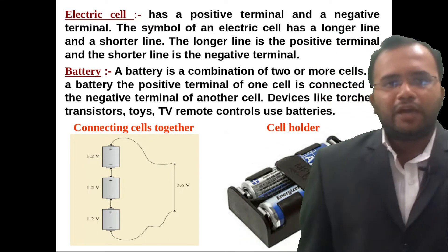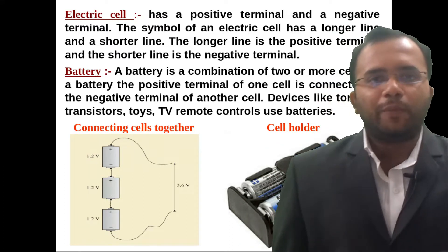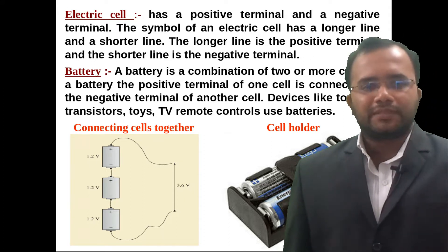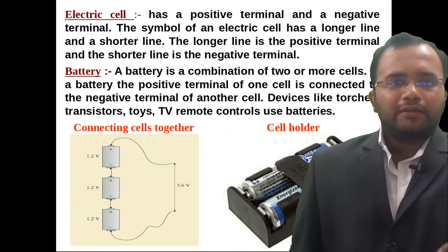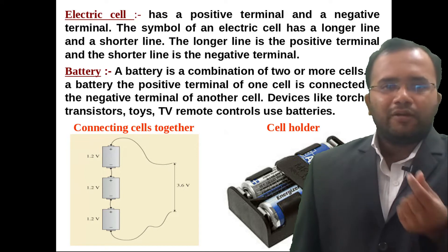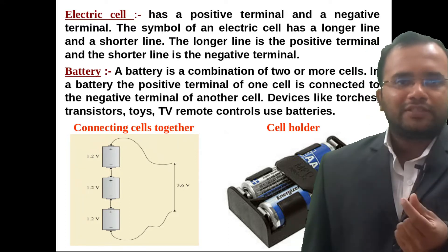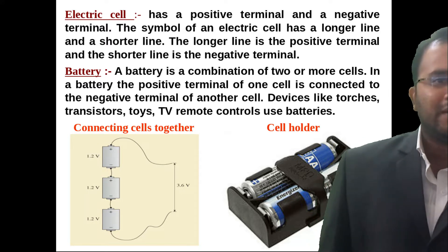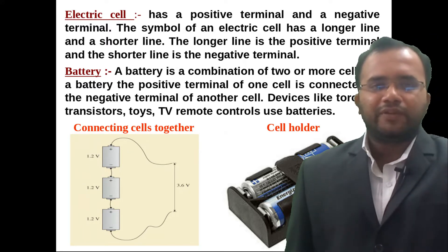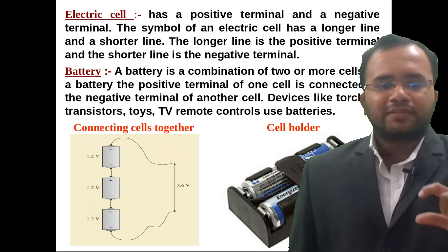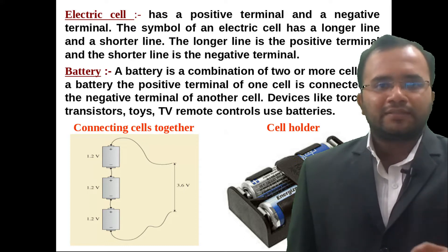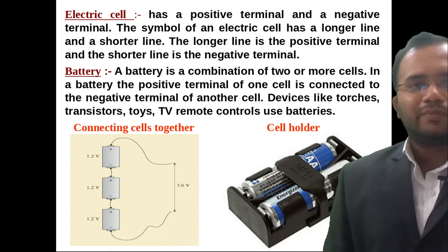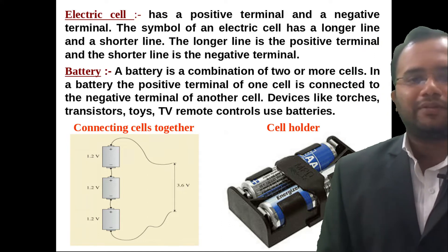What is a battery? A battery is nothing but a group of cells — two or more cells represent a battery. The positive terminal of one cell is connected to the negative terminal of another cell. As we can see in the figure, a group of three cells is connected together, and that is called a battery.